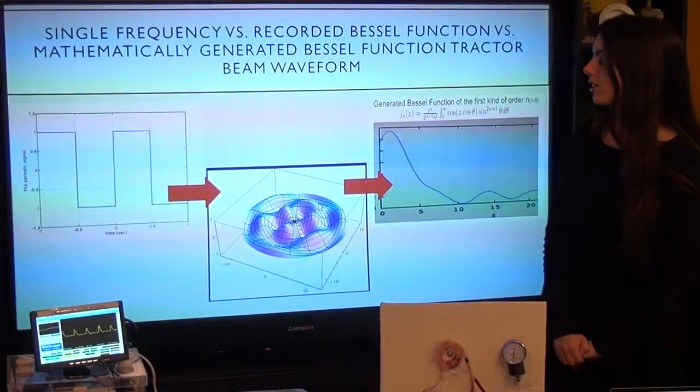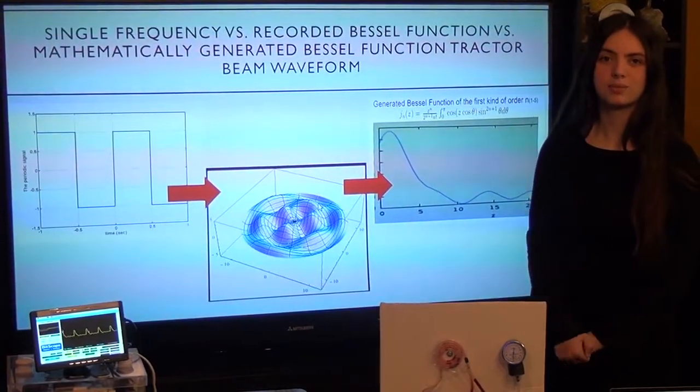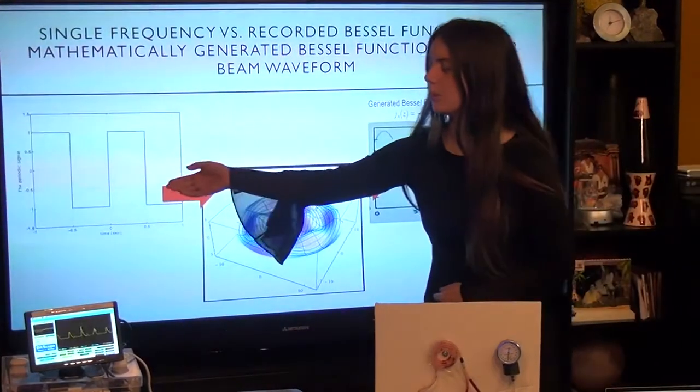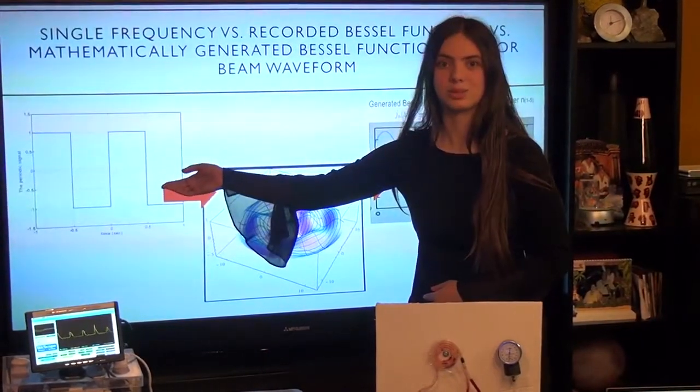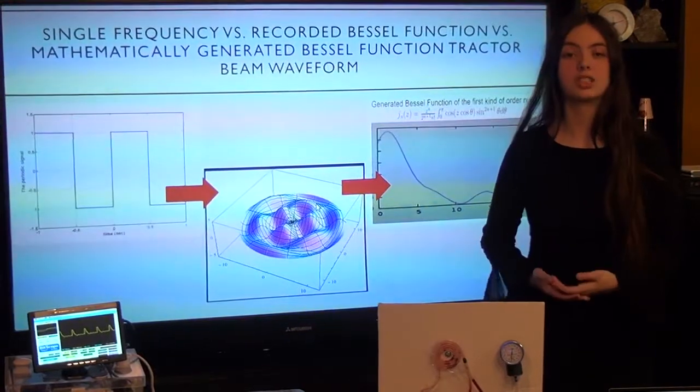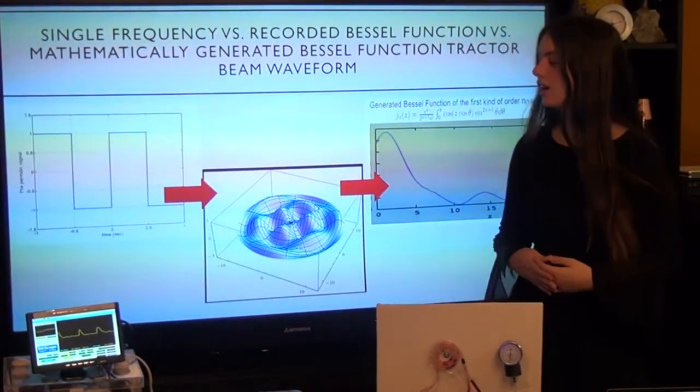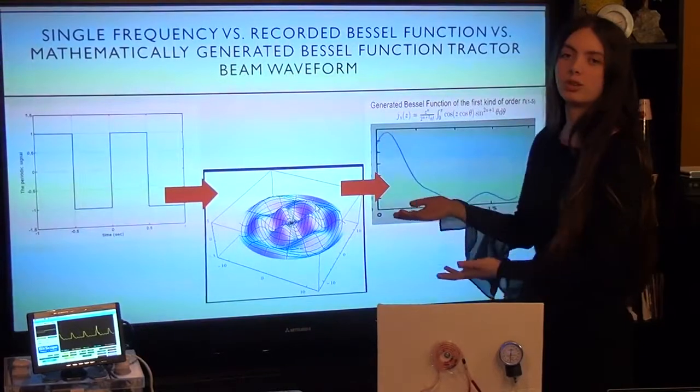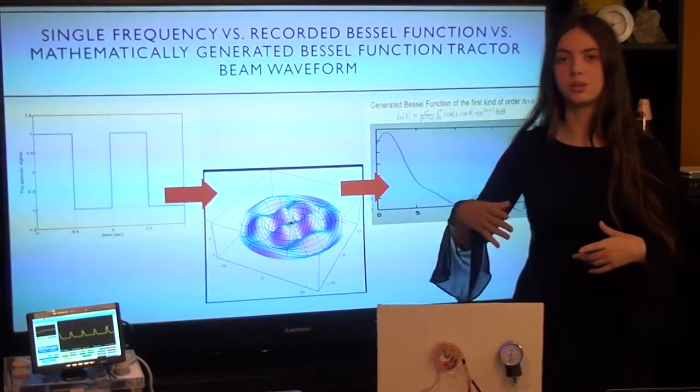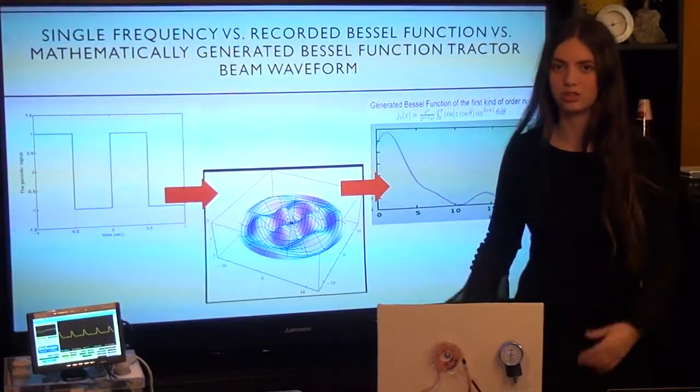Here we have three different waveforms that you can find in medical technology. This one is the one that most commercial medical technology uses, a simple square wave. However, what I want to do is make it more complex and possibly more effective by using the concept of a Bessel function. A Bessel function is when you have a circular membrane and you hit the middle, the waveform produced is a Bessel function.